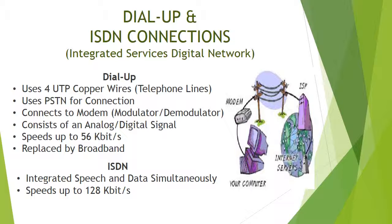Speeds on dial-up are up to 56 kilobits per second, which was eventually replaced by broadband. ISDN was the first technology after dial-up to integrate speech and data simultaneously, attaining speeds of up to 128 kilobits per second.